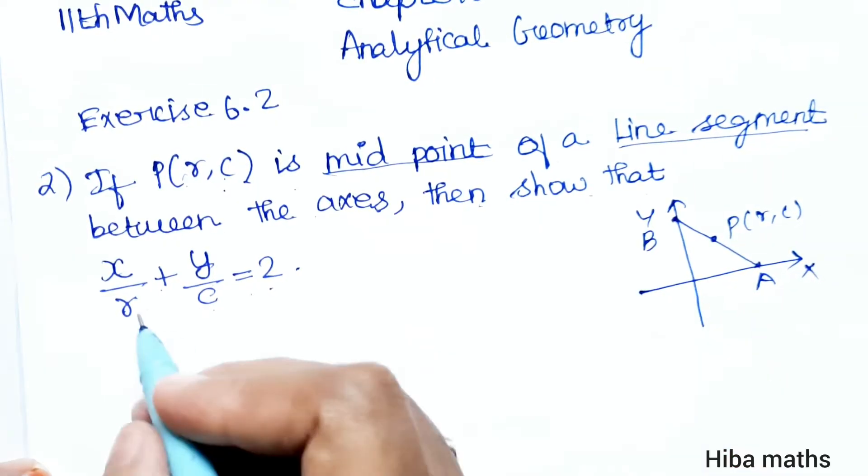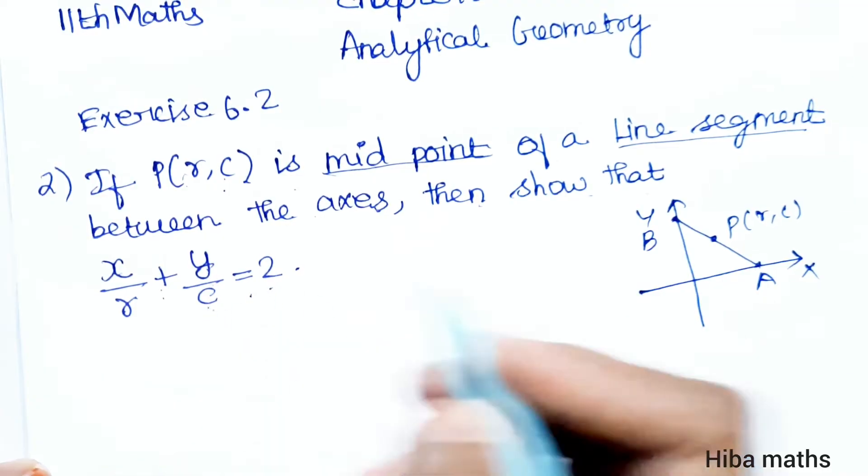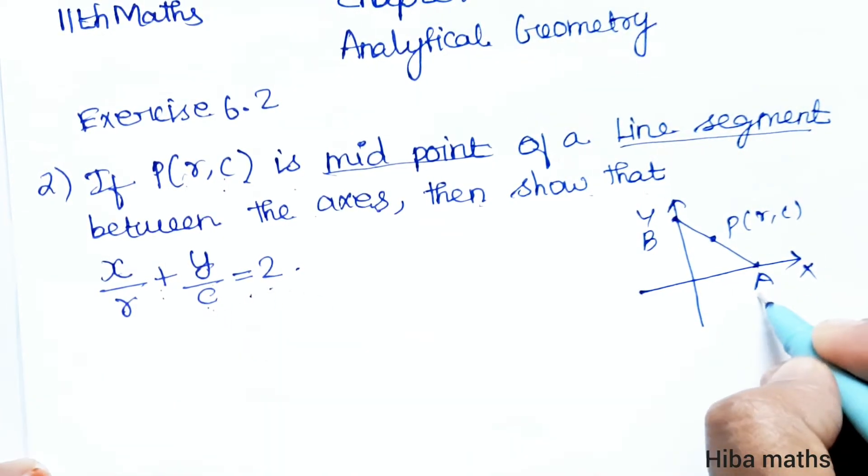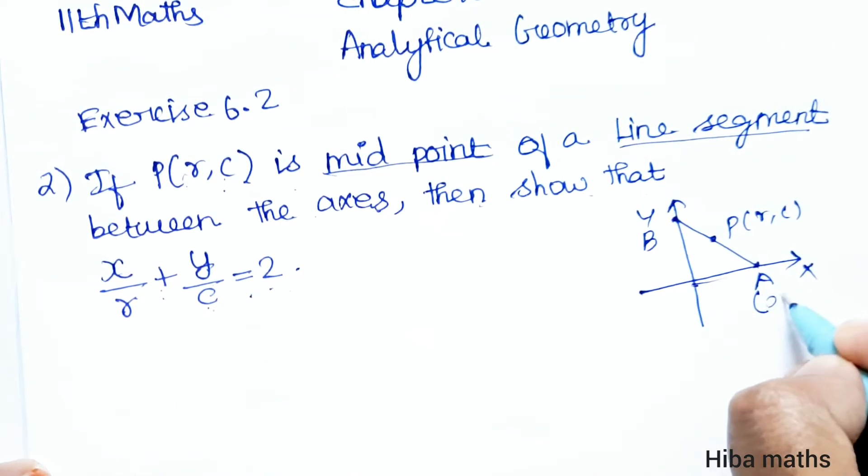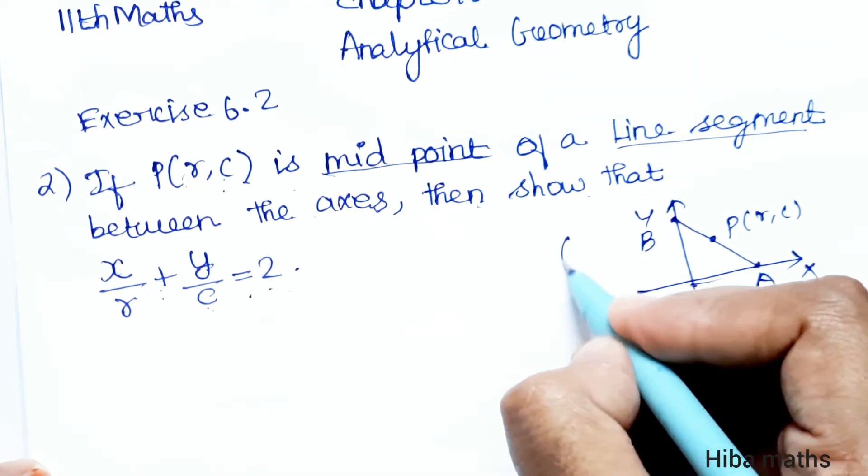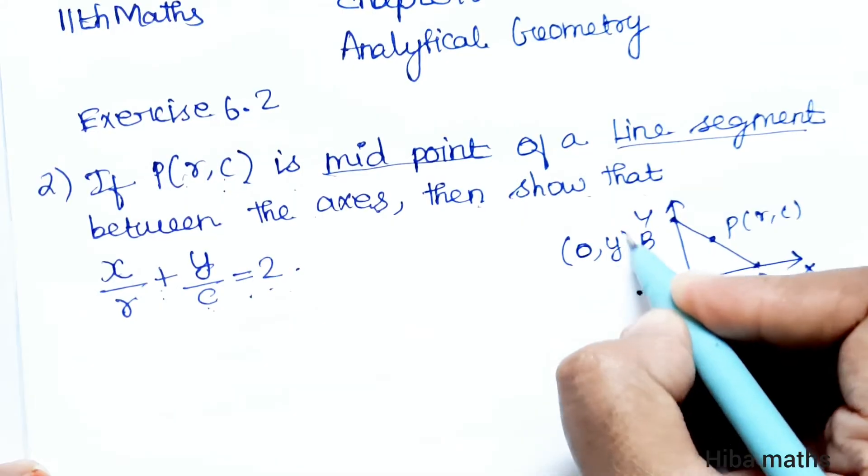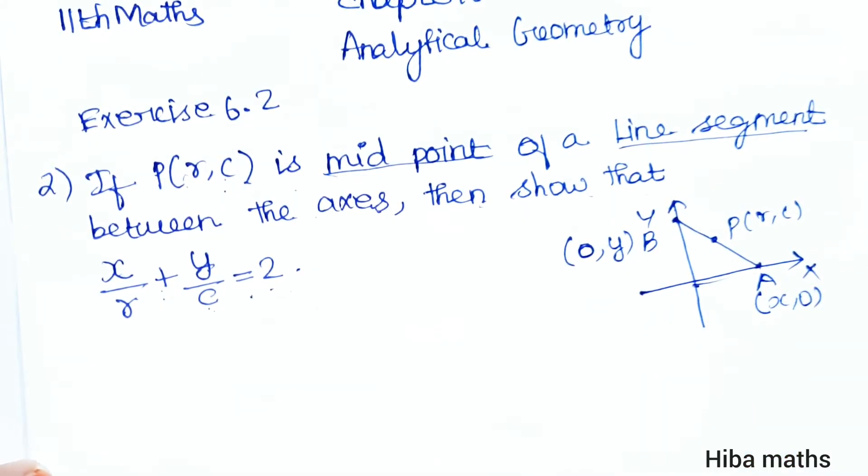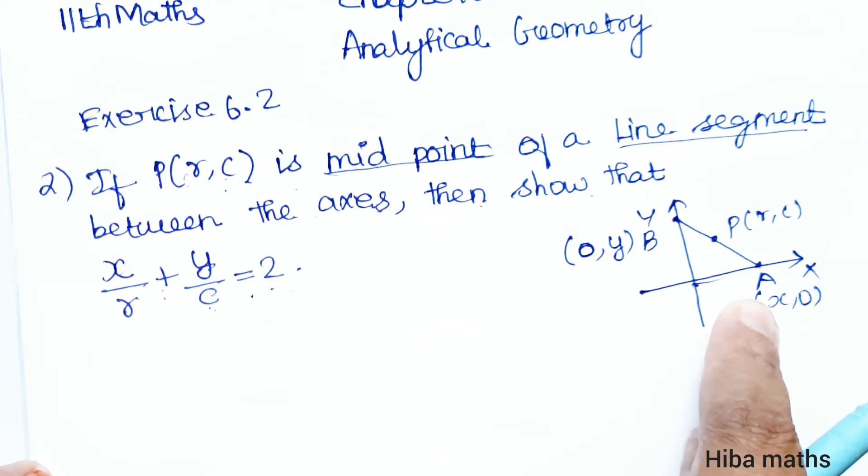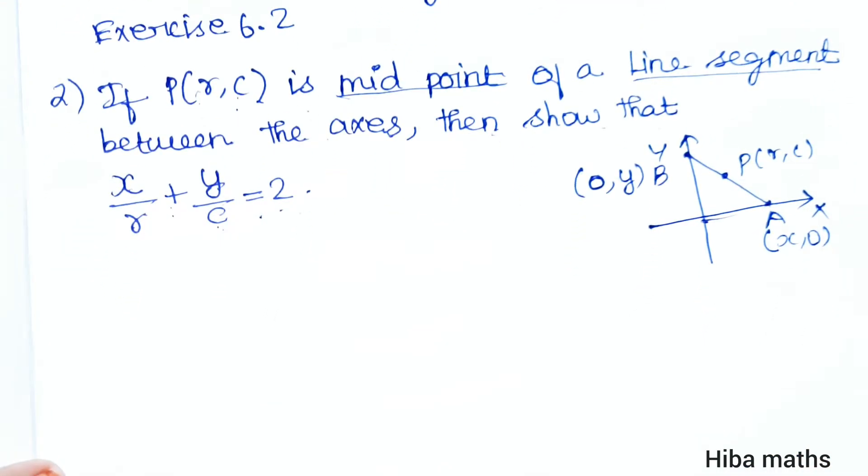This will prove x by r plus y by c is equal to 2. Now A is a point with x value and y is 0. B is a point with x value 0 and y on the y-axis. So this midpoint is r,c. First of all we have to find the equation.